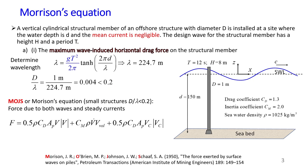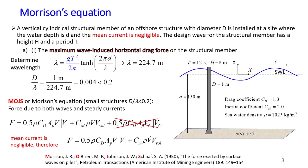I can use Morrison's equation to calculate forces due to both waves and steady currents. This is the full equation — on the left-hand side is the total force acting on the structural member. On the right-hand side there are three terms: the first is wave-induced drag force, the second is wave-induced inertia force, and the last is drag force due to steady current. Since the mean current is negligible, the last term can be cancelled. Therefore, the simplified Morrison equation has only two terms: drag force due to waves and inertia force due to waves.